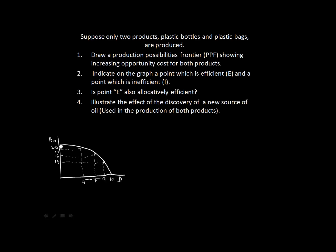A simple way to remember this: a curve bowed outward like this one automatically indicates increasing opportunity cost. In sub-question two, it says indicate on this graph a point which is efficient and a point which is inefficient. We'll draw a new graph for illustrative purposes — again with bags on the horizontal axis and bottles on the vertical axis — and draw our PPF.